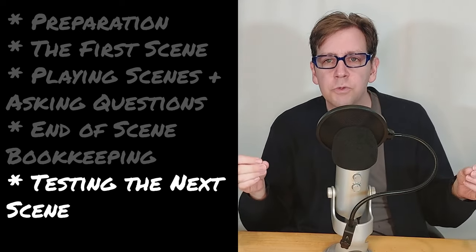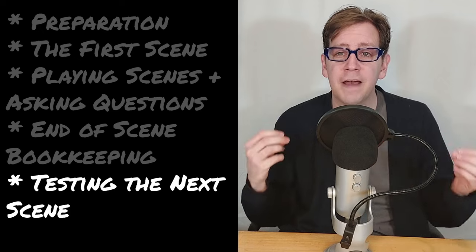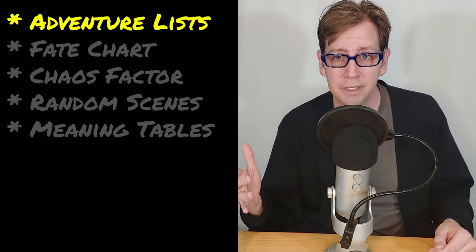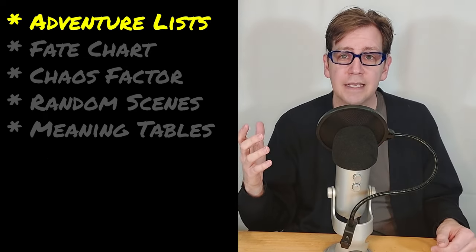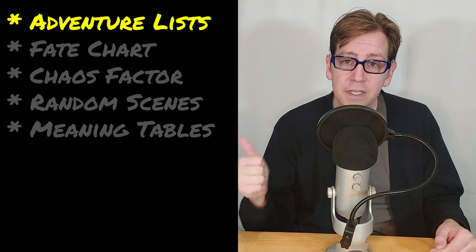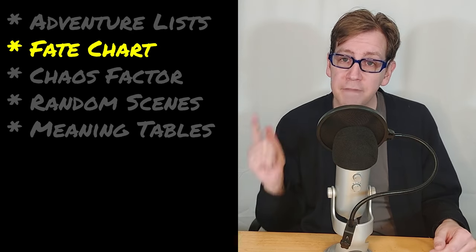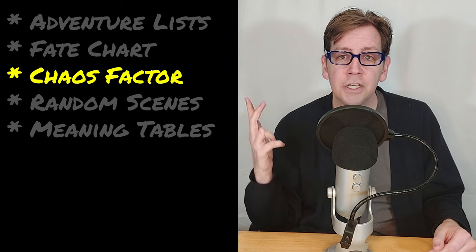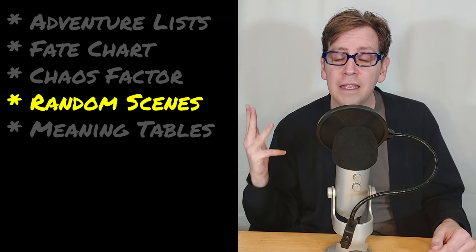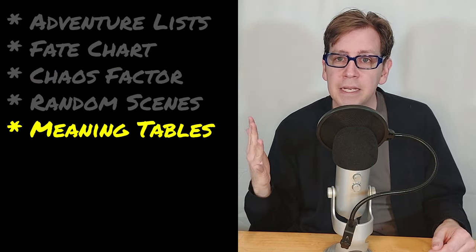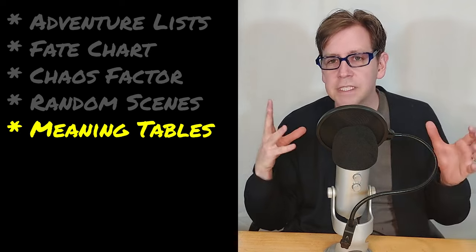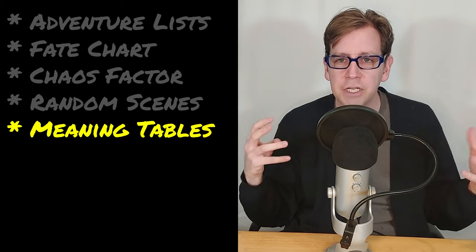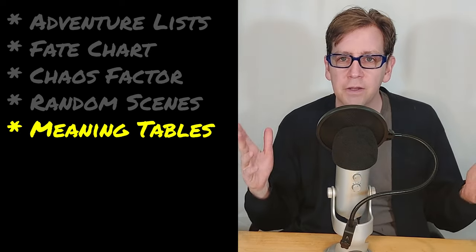In doing so, we'll touch on what I consider to be the five main pieces of the Mythic machine: the adventure lists, the fate chart, the chaos factor, random scenes, and the meaning tables. We'll see how all of these pieces fit together to make the machine of Mythic work.